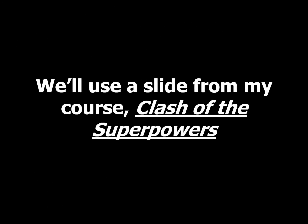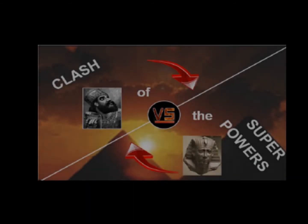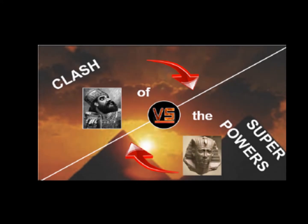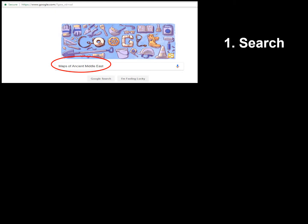What we're going to do for this lesson to illustrate some of these concepts is to use a slide from my course, Clash of the Superpowers. My course is a comparative history curriculum that compares the clash of world superpowers in the year 600 BC between Babylon and Egypt to the clash of world superpowers in the 20th century between the United States and the Soviet Union. One of the types of images that I needed was maps of the Middle East in both ancient and modern times.